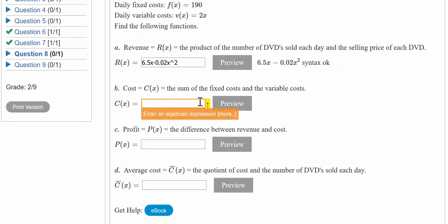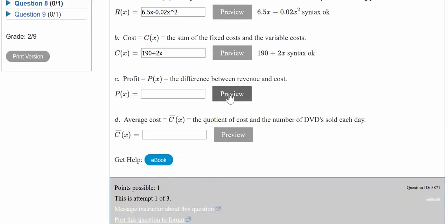The cost function was 190 plus 2x. Let me enter that and preview to make sure it's correct.